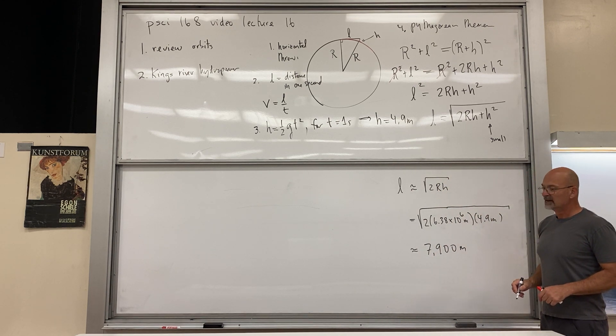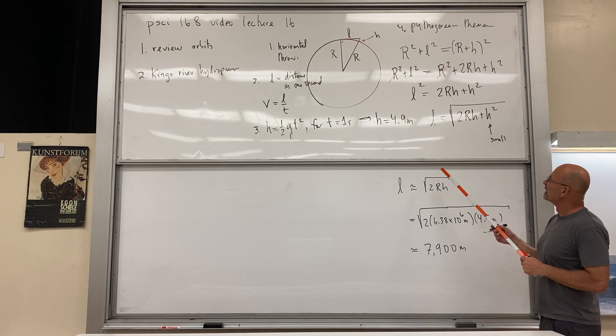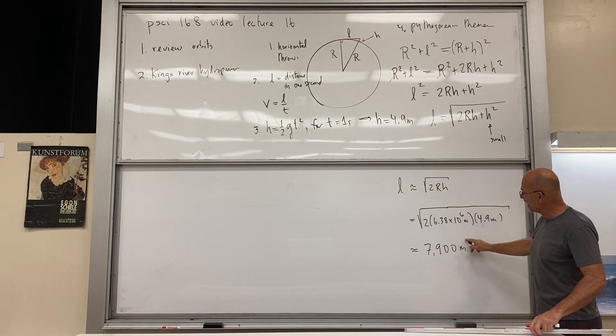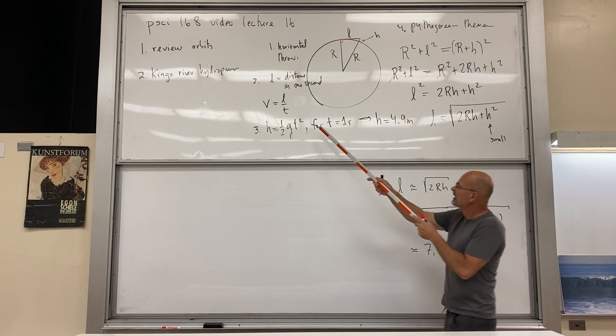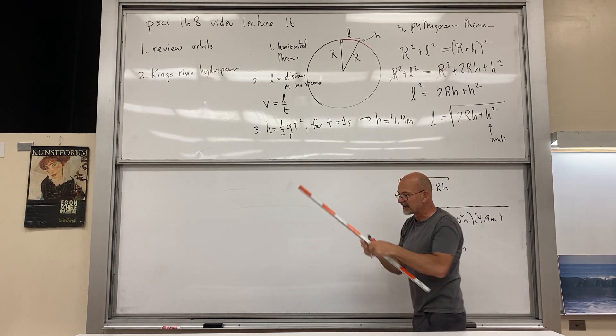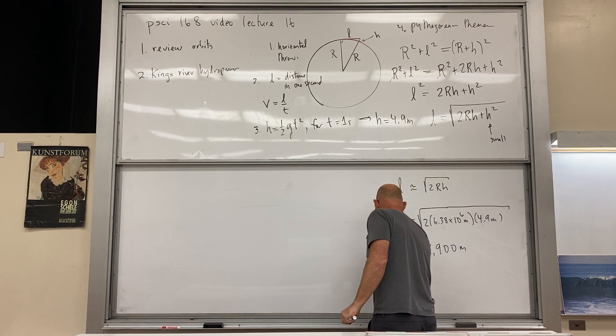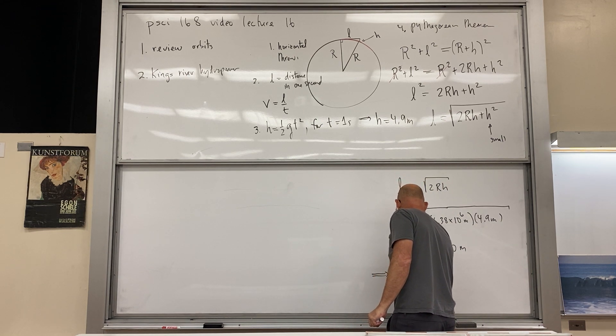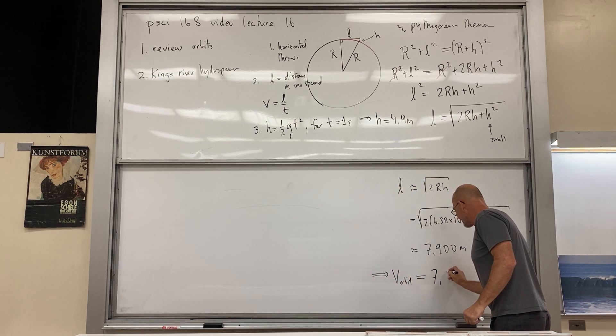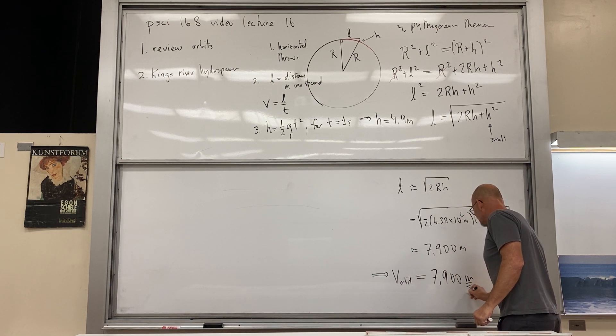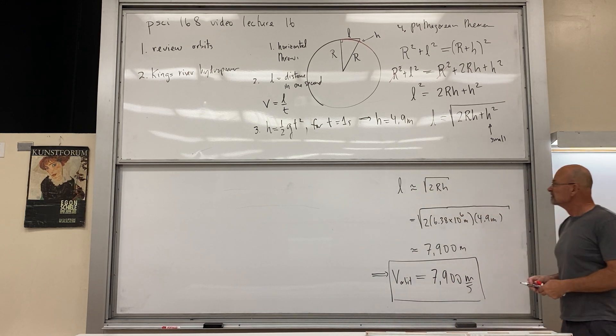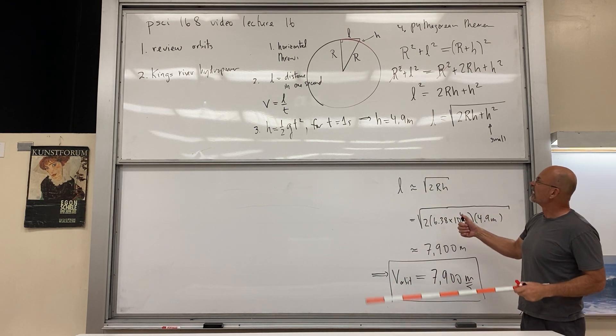And this is where you get something that's close to 7900 meters. Okay, so that's how we did a geometry problem and found this length. And the speed now is this length in one second, right? So meters per second, because of that. v orbit, and that's for a near earth orbit, is I'm just going to write 7900 meters per second.